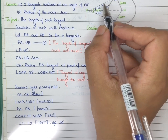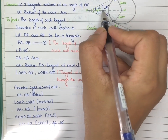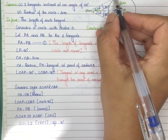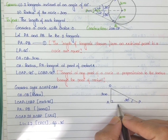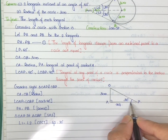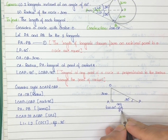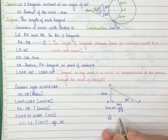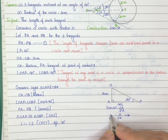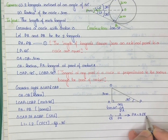Next, consider right triangle OAP. Angle APO is equal to 30 degrees and OA is equal to 3 centimeters. Now find the length of PA. With respect to angle APO, PA is the adjacent side and OA is the opposite side. So apply tan: tan 30 is equal to opposite side OA divided by PA. Tan 30 equals 1 over root 3, so 1 over root 3 equals 3 over PA. Cross-multiplying gives PA equal to 3 root 3 centimeters.